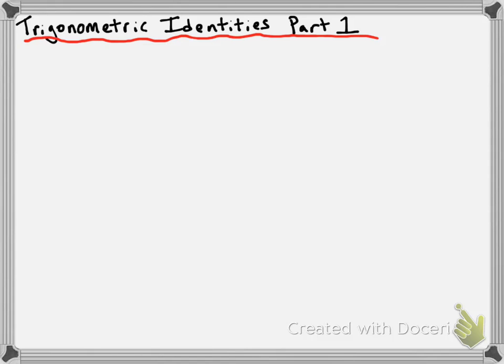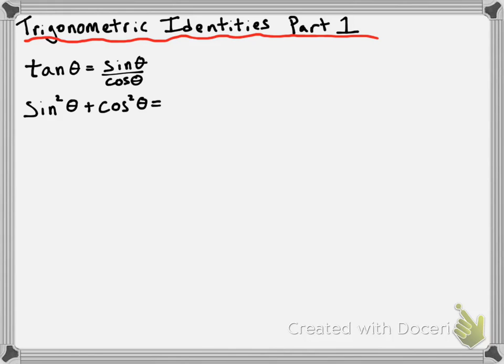So we had two main trigonometric identities. Tangent of theta is equal to sine of theta over cosine of theta. And sine squared of theta plus cosine squared of theta equals 1. These are the main identities — these two, along with the reciprocal identities, are going to be useful in pretty much every trigonometric identity you're trying to prove.